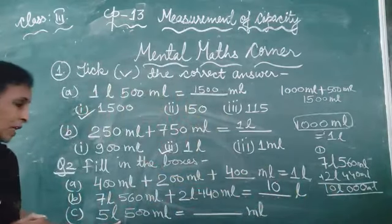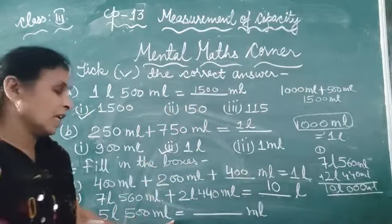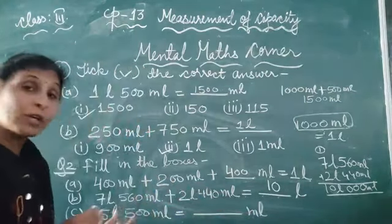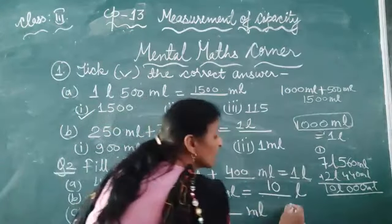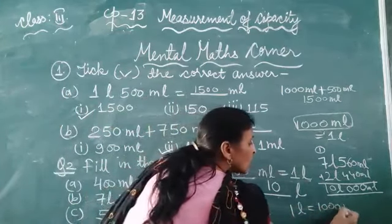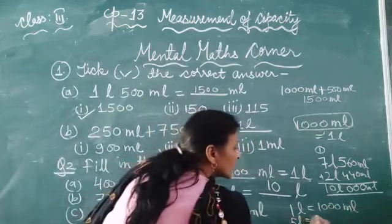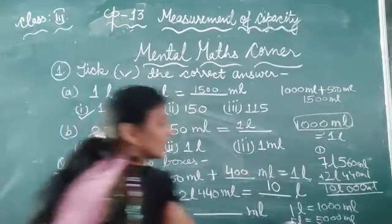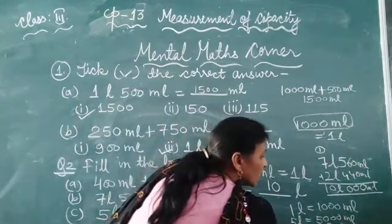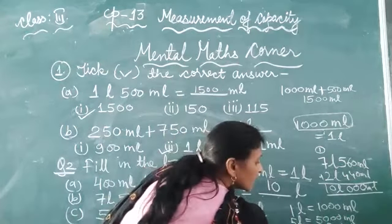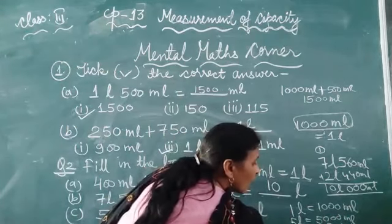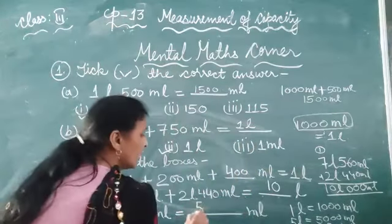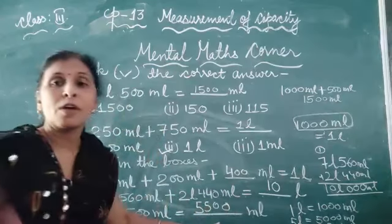Part C: 5 litre 500 millilitre is equal to dash millilitre. Convert into millilitre — 1 litre equals 1000 millilitre, so 5 litre equals 5000 millilitre, plus 500 millilitre. Our answer is 5500 millilitre.